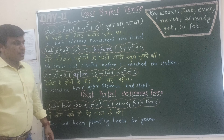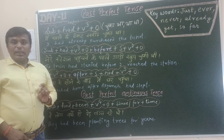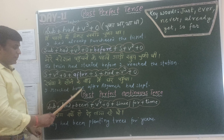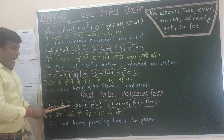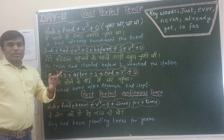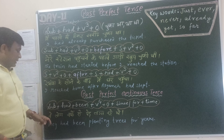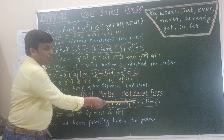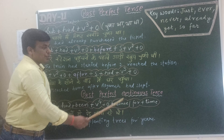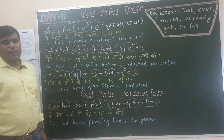Now for past perfect continuous tense — just as present perfect continuous uses has/have been, past perfect continuous uses had been. For example: वे लोग वर्षों से पेड़ लगा रहे थे — they had been planting trees for years. मैं वर्षों से पढ़ा रहा था — I had been teaching English for years. Remember: since is used for point of time, and for is used for period of time.